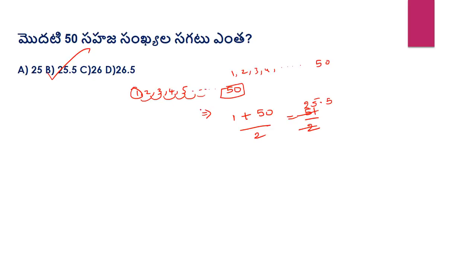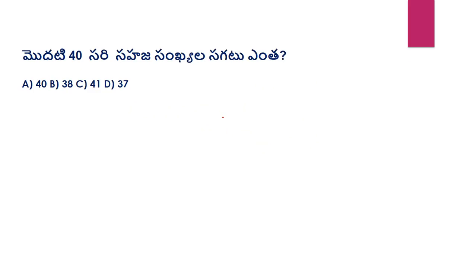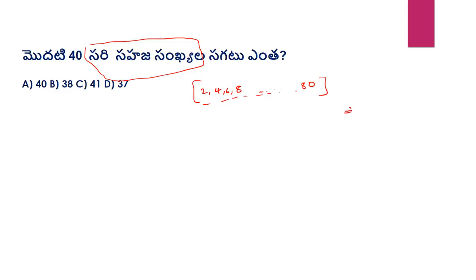If the difference is the same, use first number plus last number divided by 2. Next question: the formula is n plus 1. The number is 40, so 40 plus 1 equals 41.